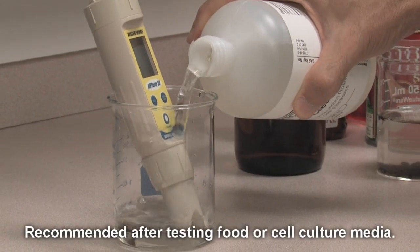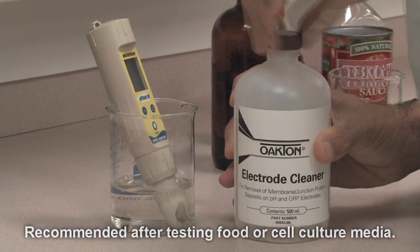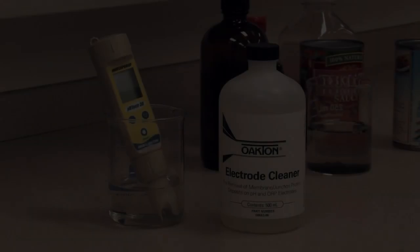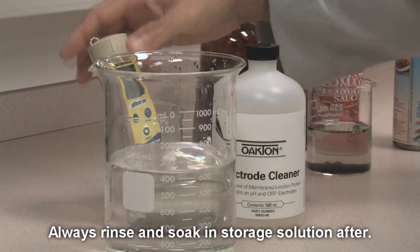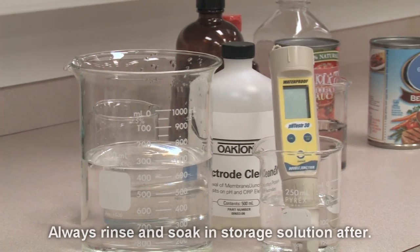For protein removal, soak the tester electrode in electrode protein remover solution overnight. The enzymes will remove proteins from glass and plastic. In the morning, rinse the electrode with deionized or distilled water and soak for one hour in storage solution.